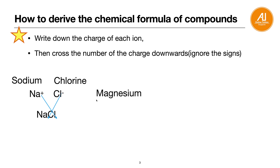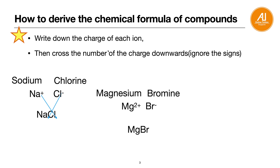Next one: magnesium and bromine. Magnesium is a group 2 metal, and bromine is group 7. So group 2 gives Mg2+, and bromine is Br-. When you put them together you get MgBr, but you need to cross down the numbers. Cross down 1 from Br (which we don't usually write), then cross down 2 from Mg. So your answer will be MgBr2.